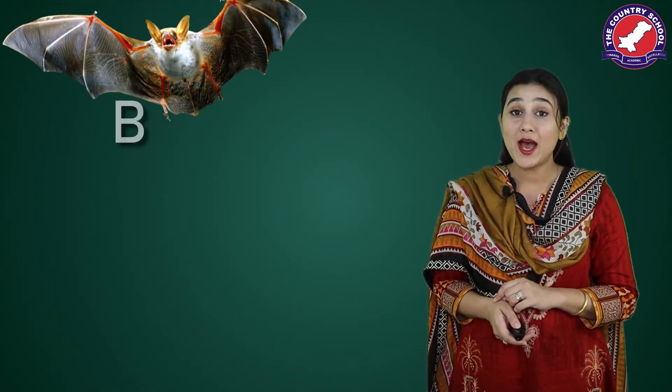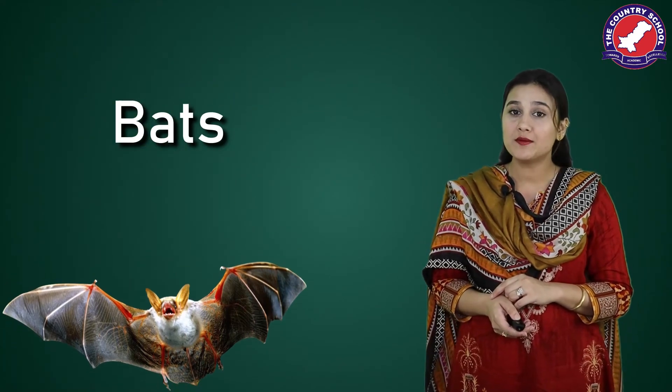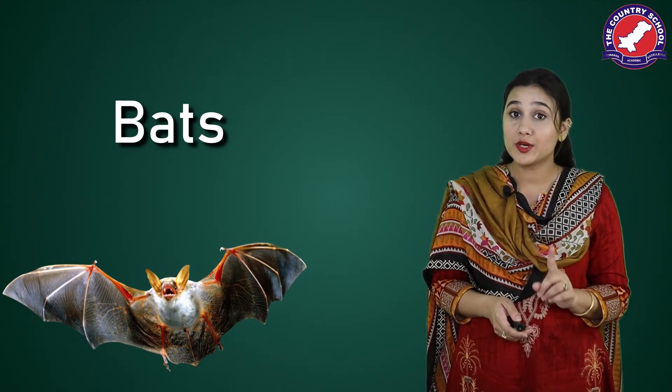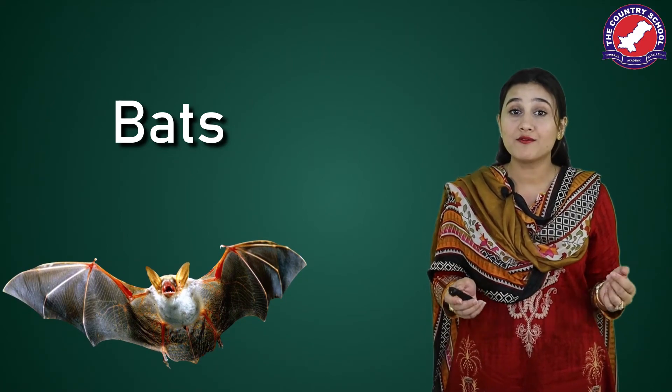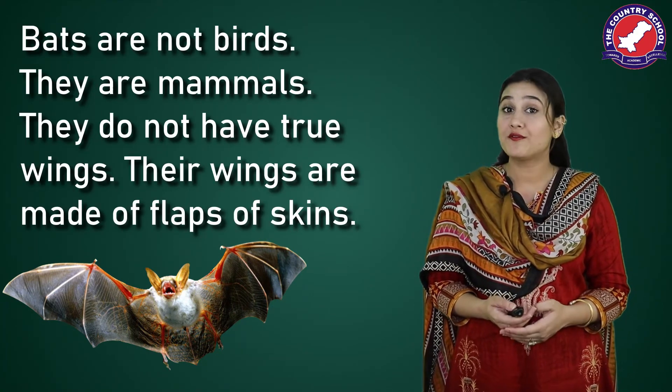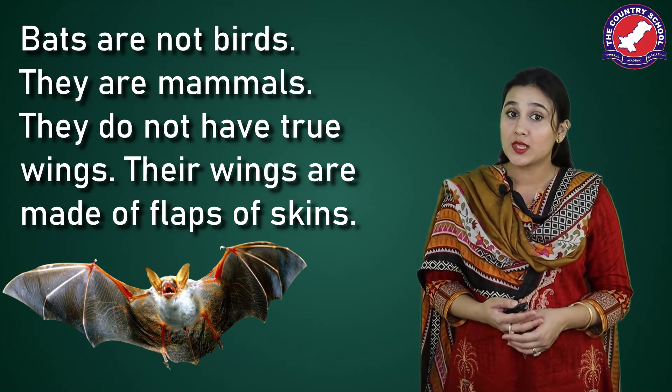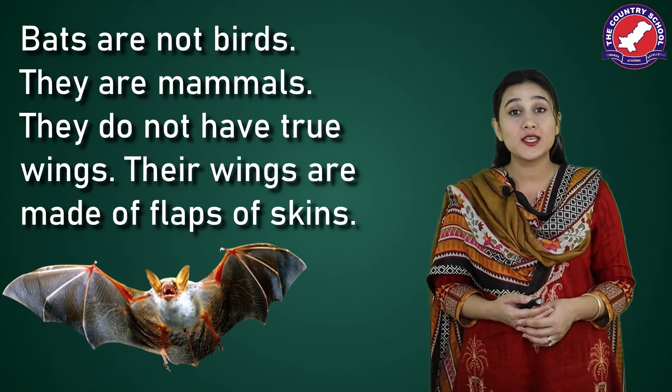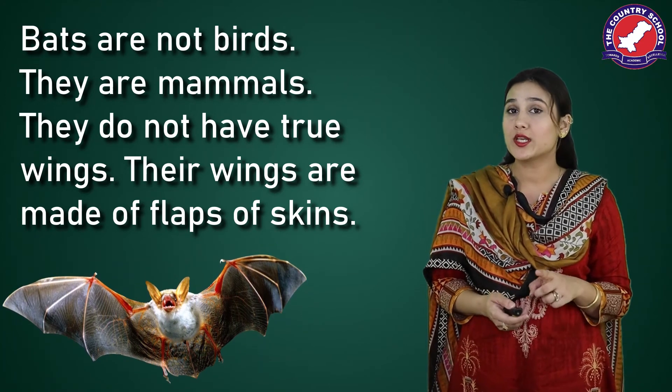Now there are birds and then there are mammals. Can you guess which mammal can fly? Bats. Although bats are mammals, they are not birds, but they still have wings and they can fly. They are not covered with feathers like birds — their wings are made of flaps of skin, and that is what helps them fly.